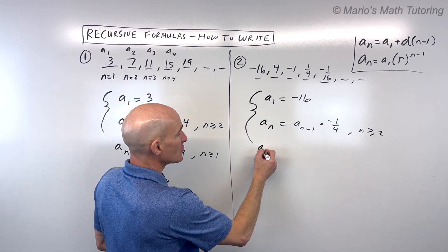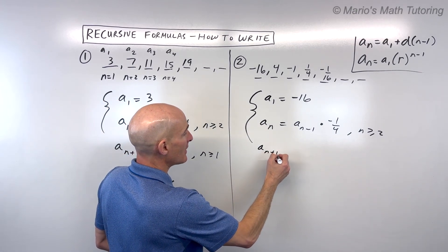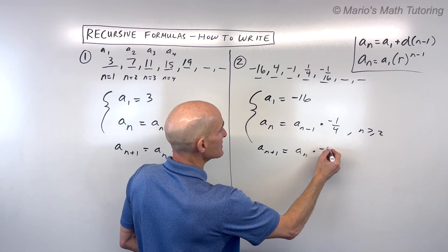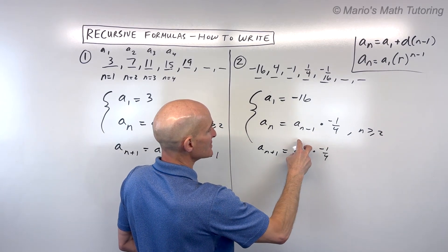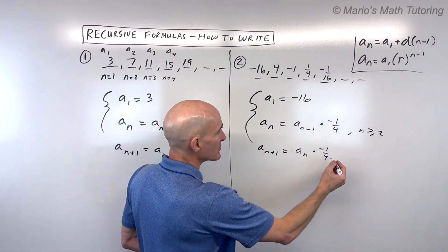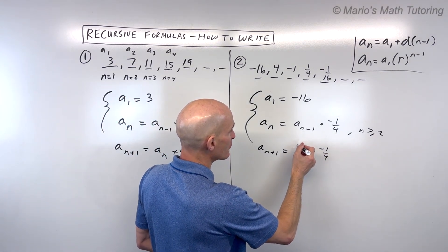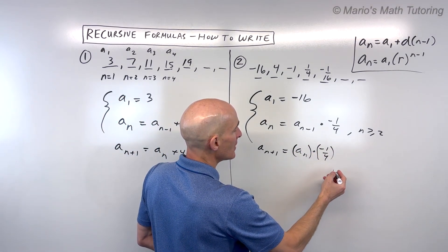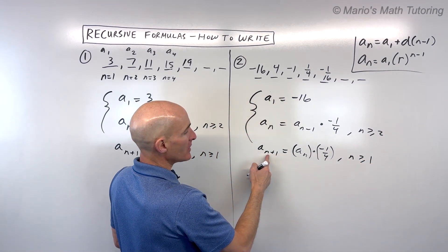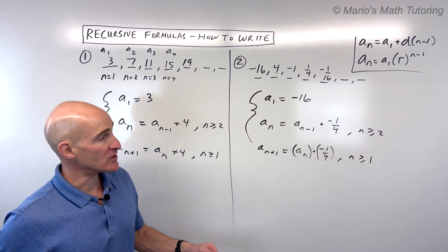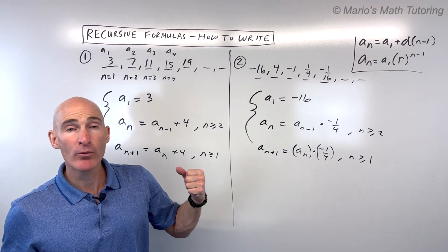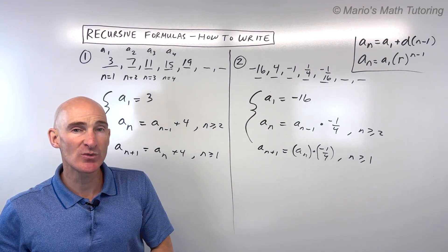If you don't like this, you could write it as: a sub n plus 1 equals a sub n times negative 1/4, where n is greater than or equal to 1. You could put the negative 1/4 right next to a sub n — if they're next to each other, that means they're multiplied together. Or you could use parentheses. Either way works. Let me erase the whiteboard and let's do some more challenging examples.